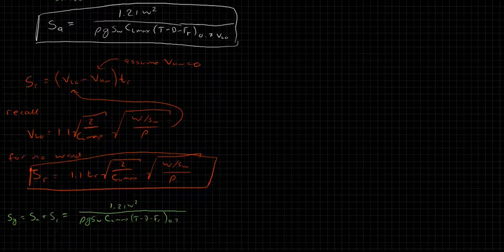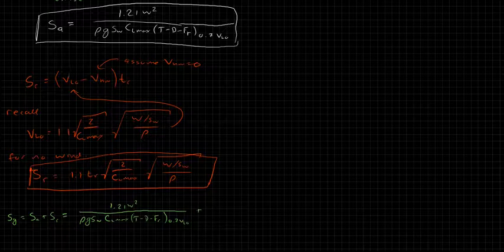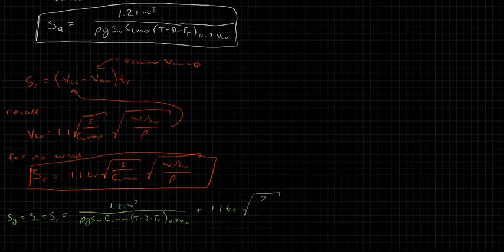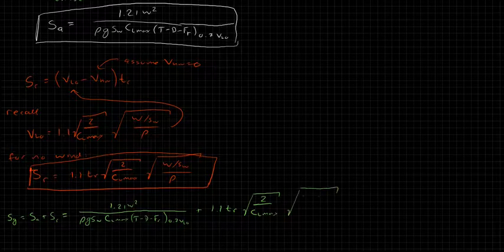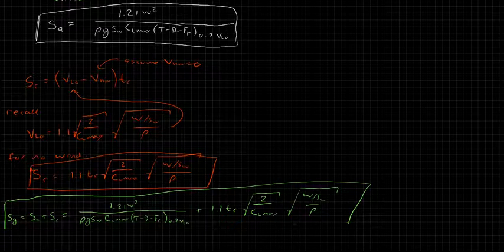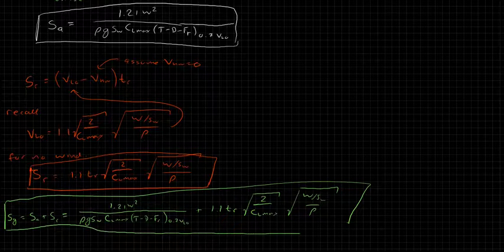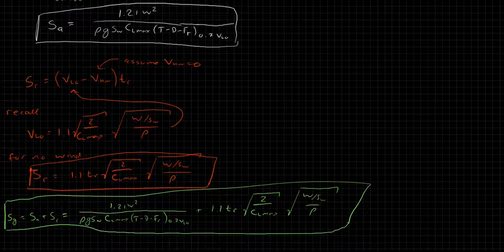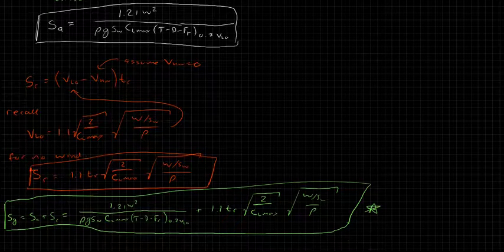Plus 1.1 times TR square root 2 over CL max times the square root of W over SW divided by rho. And there, we have an approximation, first cut approximation, for the ground roll and takeoff. We'll give that a cool star.